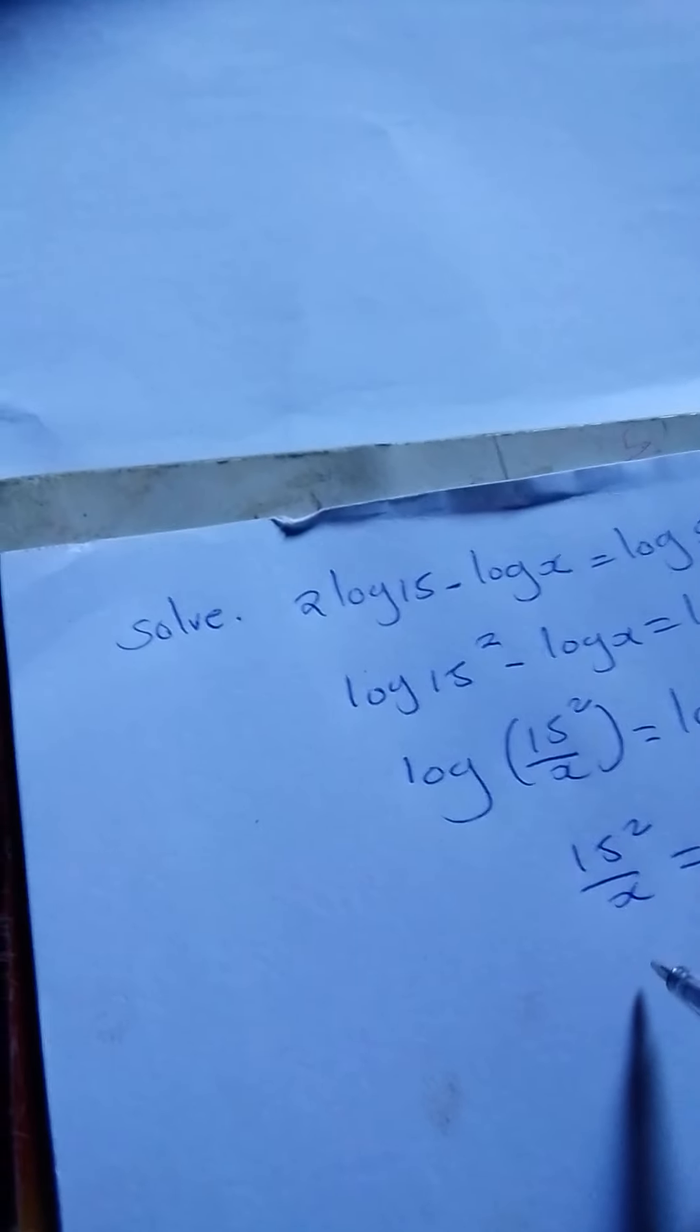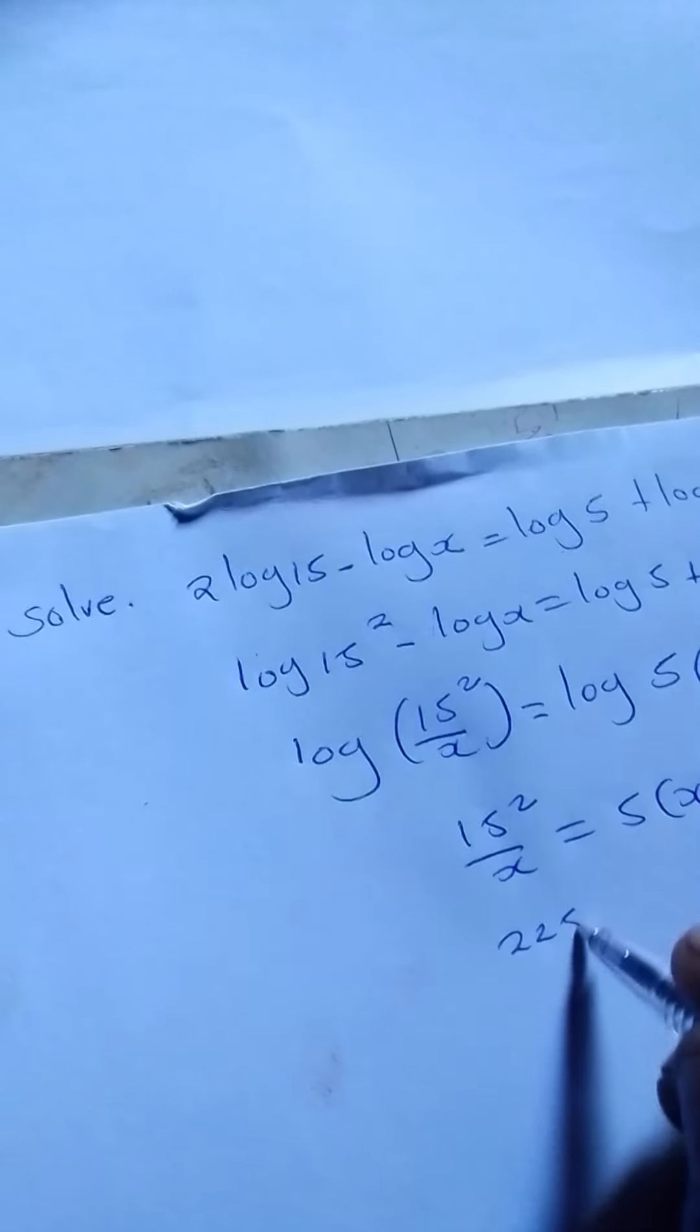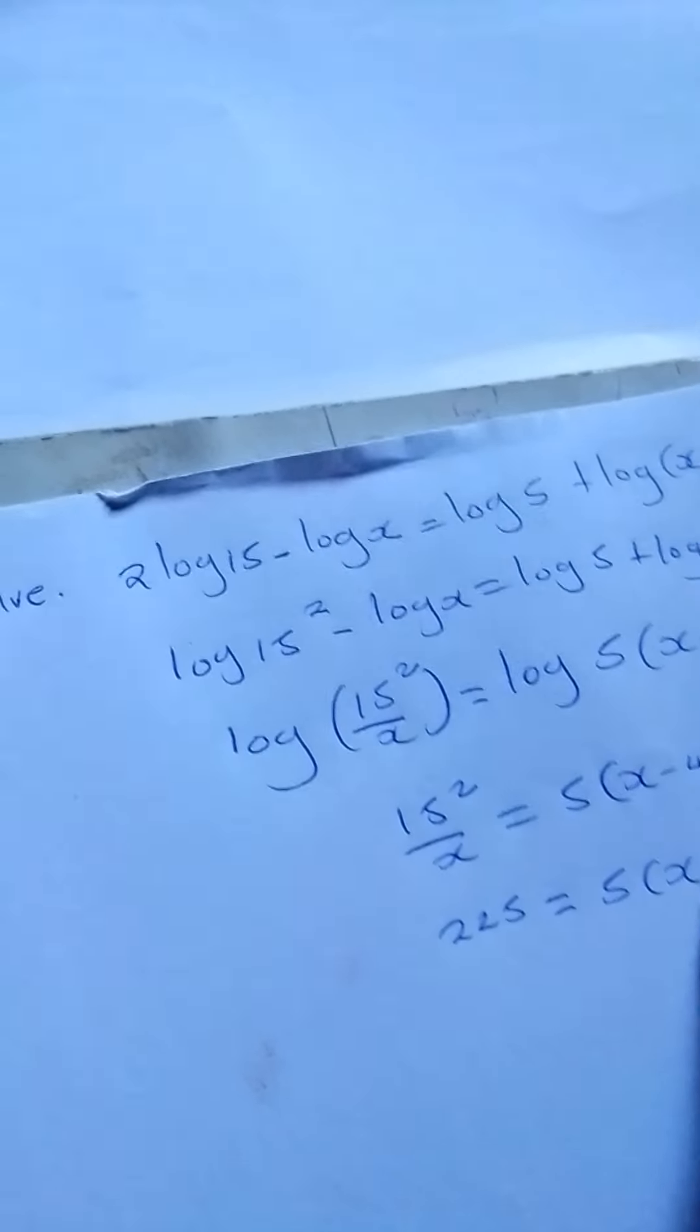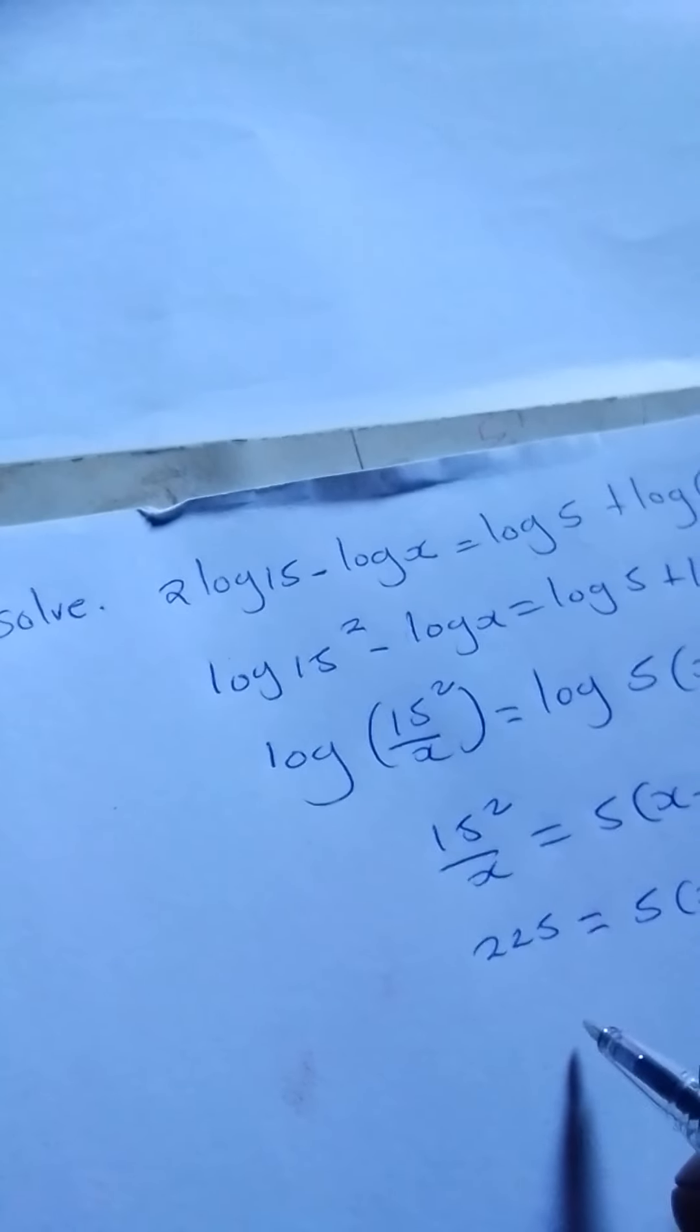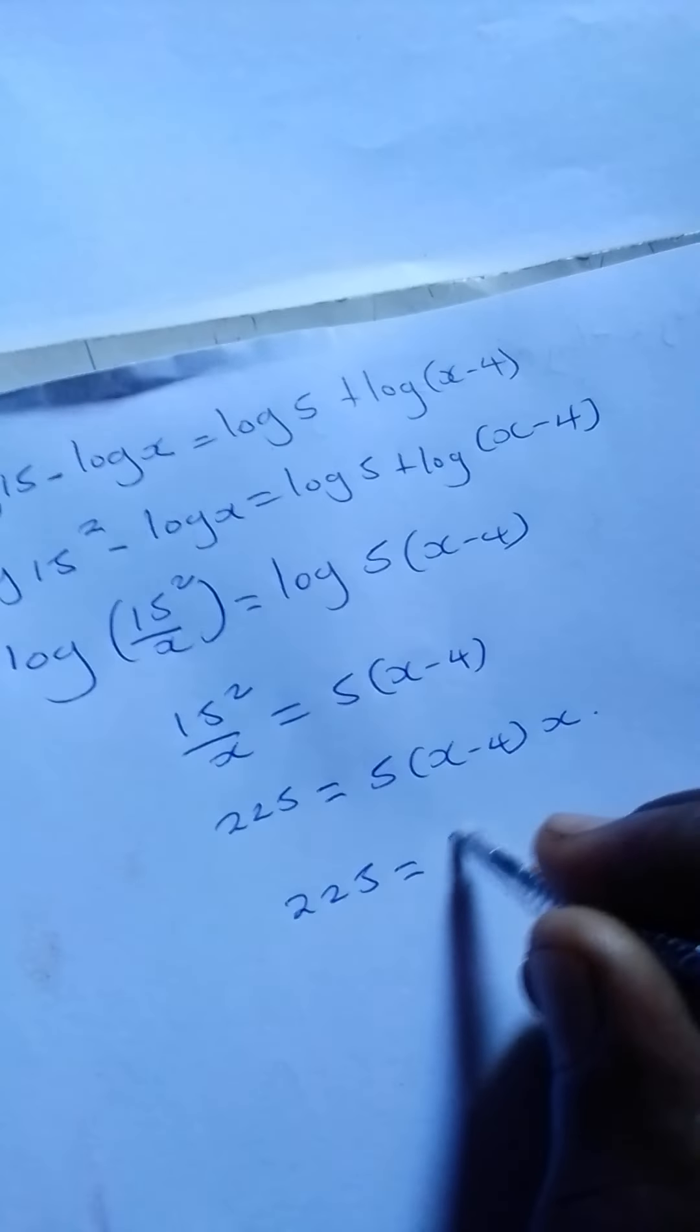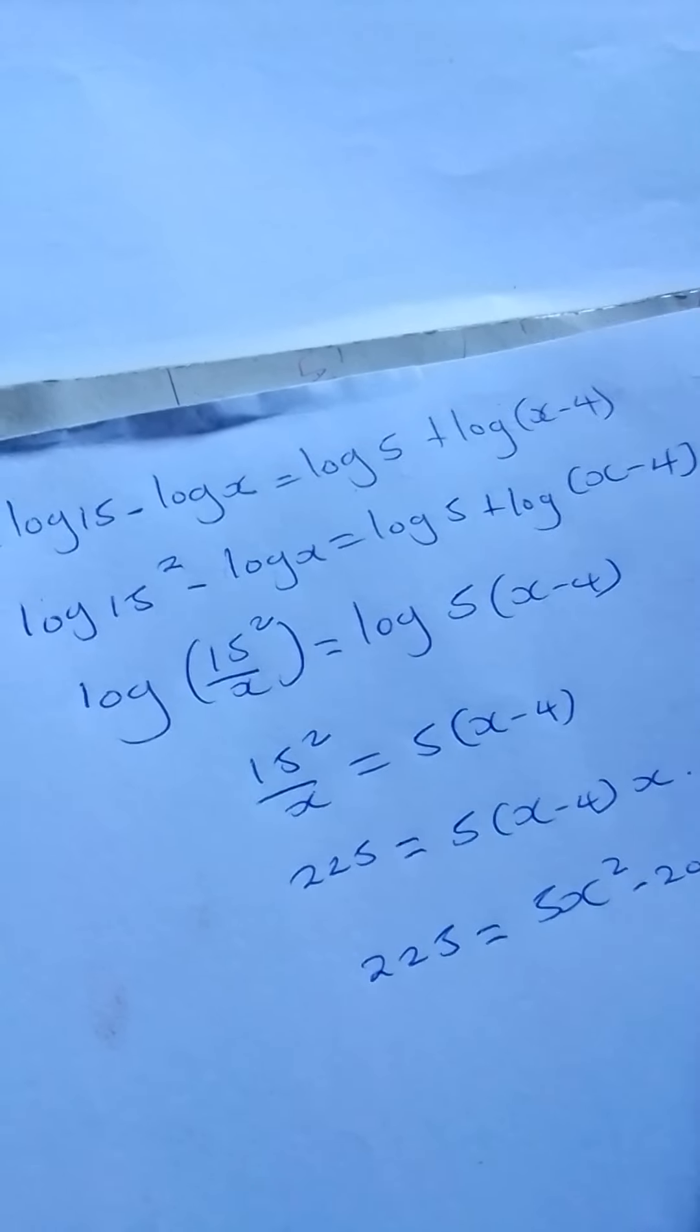Then we do cross multiplication. 15 squared will be 225, so 225 = 5(x-4) multiplied by x, which gives 225 = 5x² - 20x.